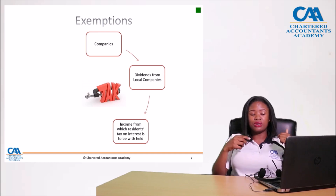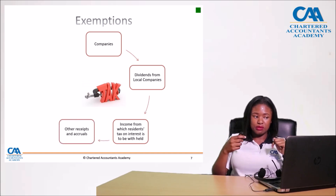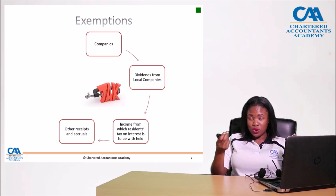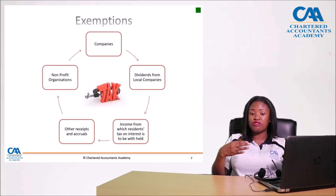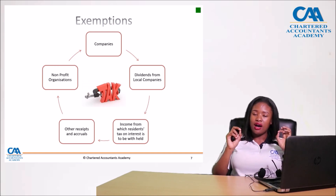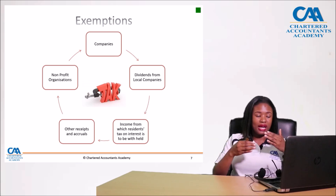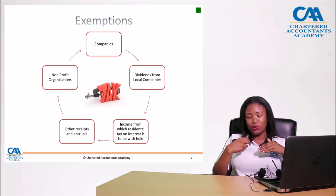Other receipts and accruals are also exempt for certain entities — for example, for building societies these are exempt. Non-profit organizations such as NGOs and councils which are not for profit are also exempt from paying tax, because exempting them from tax encourages more activity in those areas for the benefit of the community.